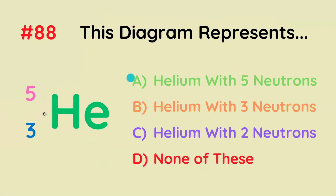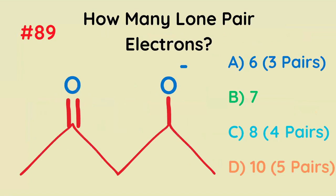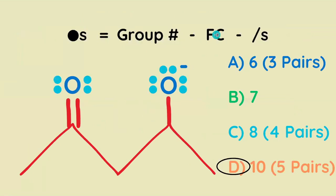This diagram represents what isotope of helium? It's actually none of them, because helium doesn't have three protons — it has two protons, so this doesn't even make sense. How many lone pair electrons does this molecule have? Rearranging the formal charge equation to solve for the number of dots, we get a total of 10 lone pair electrons, or five pairs.